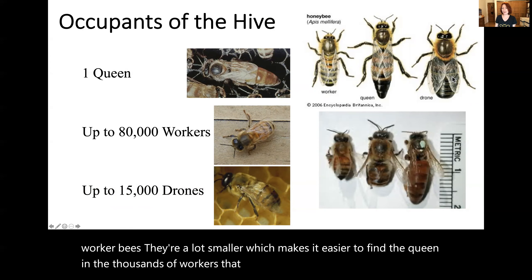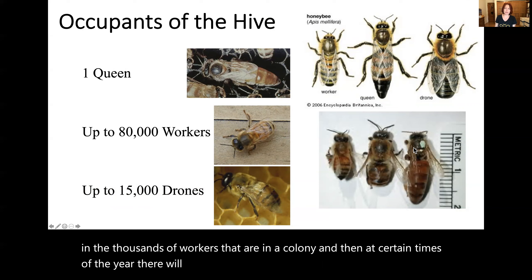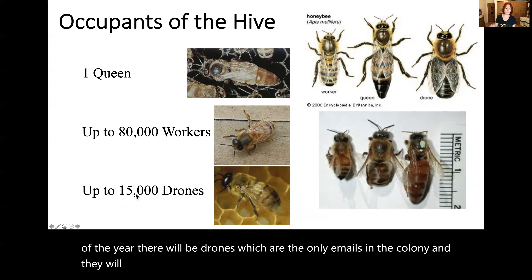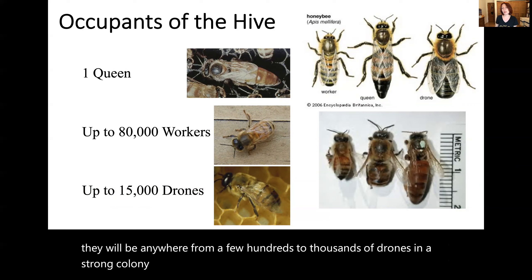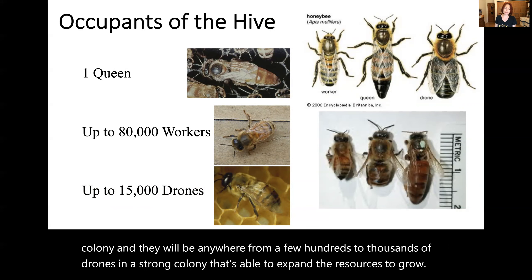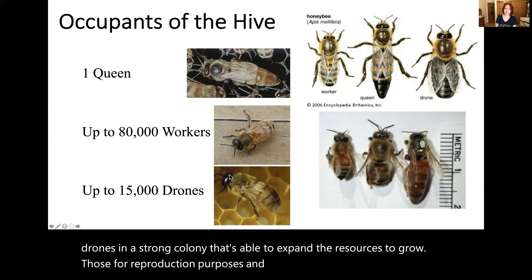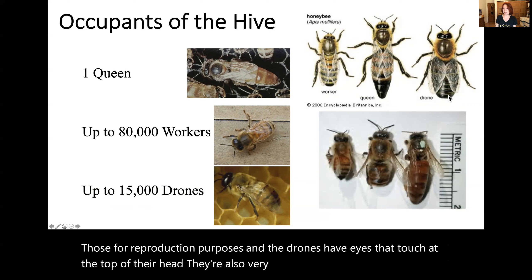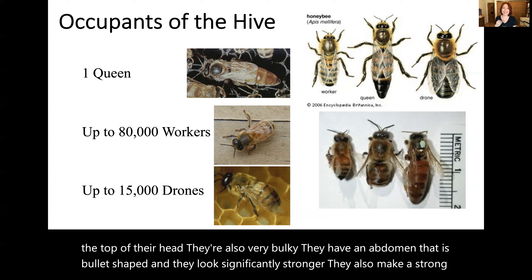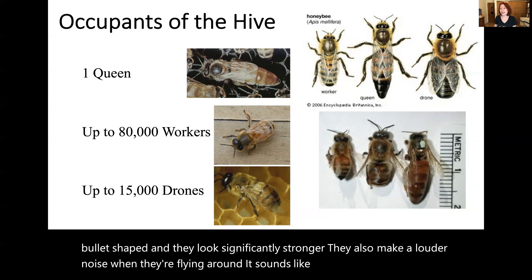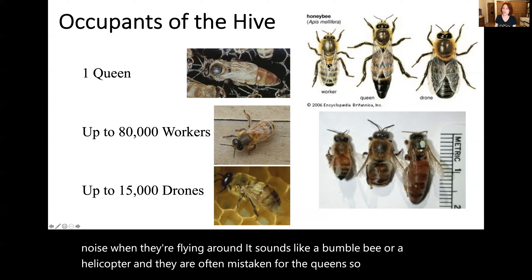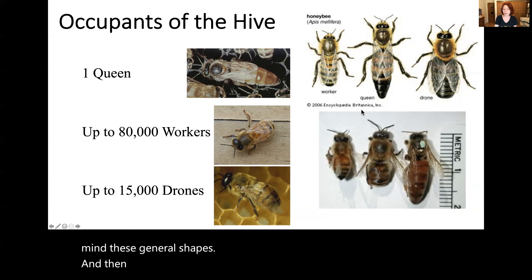At certain times of the year there will be drones, which are the only males in the colony. There will be anywhere from a few hundreds to thousands of drones in a strong colony able to expand resources for reproduction purposes. Drones have eyes that touch at the top of their head, they're very bulky, with a bullet-shaped abdomen and look significantly stronger. They also make a louder noise when flying — it sounds like a bumblebee or a helicopter — and they are often mistaken for queens. Keep in mind these general shapes, and we'll give you other tips on how to recognize them in the hive.